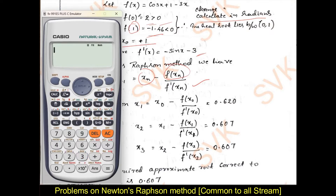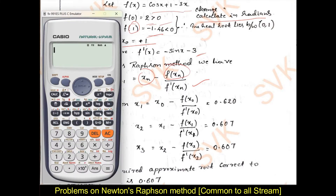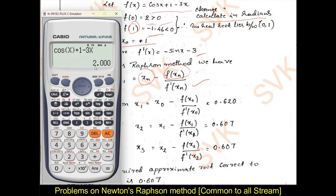First, find out f of 0 and f of 1. In your calculator, type the equation as it is: cos x plus 1 minus 3x — type that equation as it is using cos, alpha x, close the bracket, plus 1, minus 3, alpha x. Press calc, it will ask the value of x. Give x equal to 0 — you get f of 0 equal to 2. Similarly, calc, give x equal to 1, press equal to, you get a negative value. Once you get opposite values, you can stop at that state.